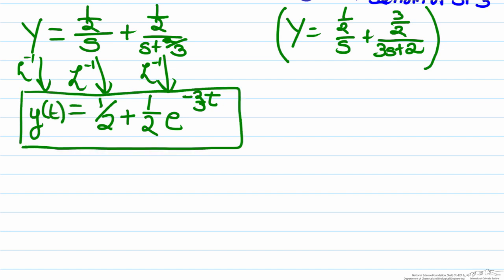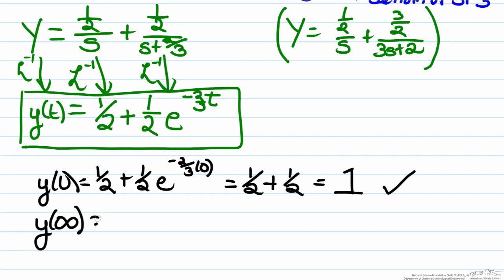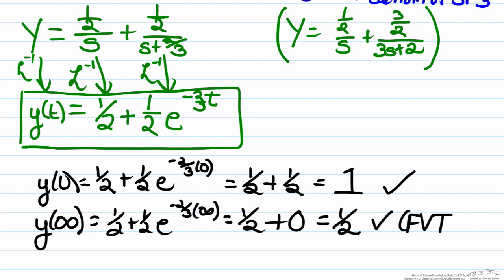Now that we have found y of t, let's check what happens at t equals zero and t equals infinity. y of zero equals one half plus one half times e to the negative two thirds times zero; the exponential equals one, so it's one half plus one half, which equals one — consistent with our initial condition. As t goes to infinity, this equals one half plus one half times e to the negative two thirds times infinity; the exponential goes to zero, leaving one half, which is consistent with what was determined from the final value theorem.